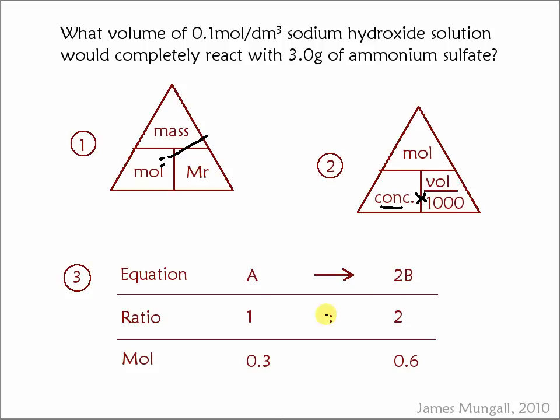If you've got a balanced chemical equation, say A goes to 2B, then we could say that that's in a 1 to 2 ratio, the A to B. So however much mole you've got of A, then you will form twice as much mole of B.